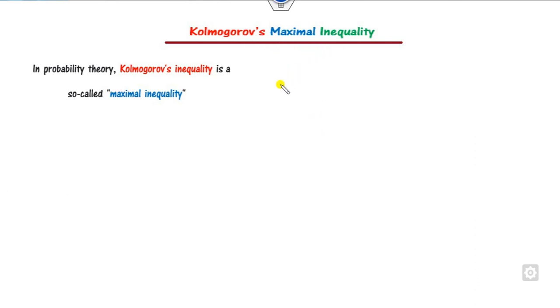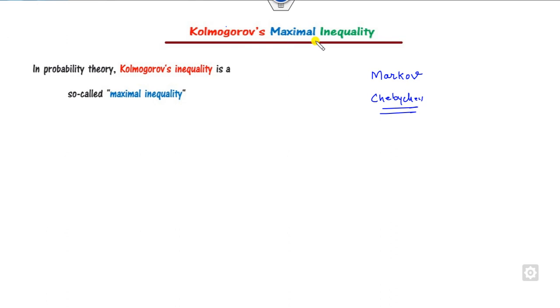The objective of this lecture is to see what is the Kolmogorov maximal inequality and its proof. Before we start, we have already discussed two inequalities related to Markov and Chebyshev. So we must first know the basic difference between the Kolmogorov maximal inequality and the Markov and Chebyshev inequalities.